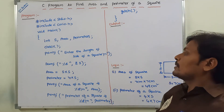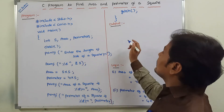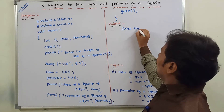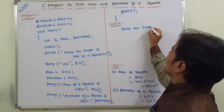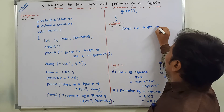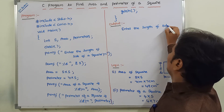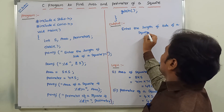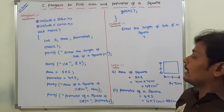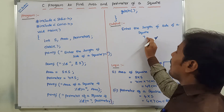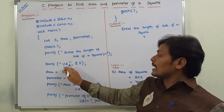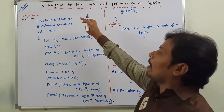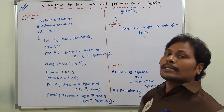Now, what is the output of the program? In the output, the statement "Enter the length of side of a square" is printed on the screen. We enter 7 as the input. This value 7 is read from the keyboard using the scanf function. Both printf and scanf functions are available in the header file stdio.h, which is why we include it in our program.